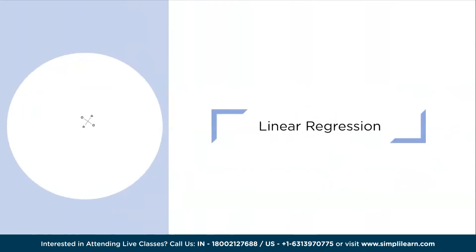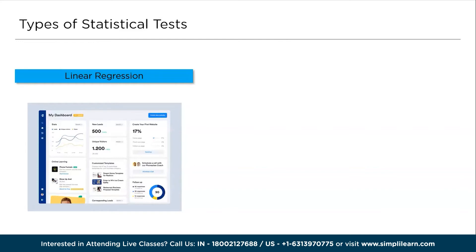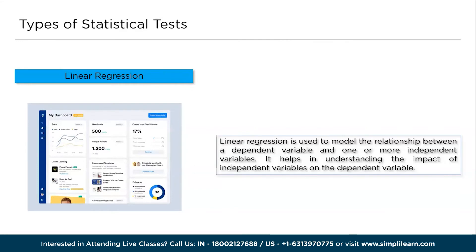Next, at the seventh position, we have linear regression. Linear regression is used to model the relationship between a dependent variable and one or more independent variables. It helps in understanding the impact of independent variables on a dependent variable. It assumes a linear relationship to find the best-fitting line that minimizes the sum of squared differences between the observed and predicted values.